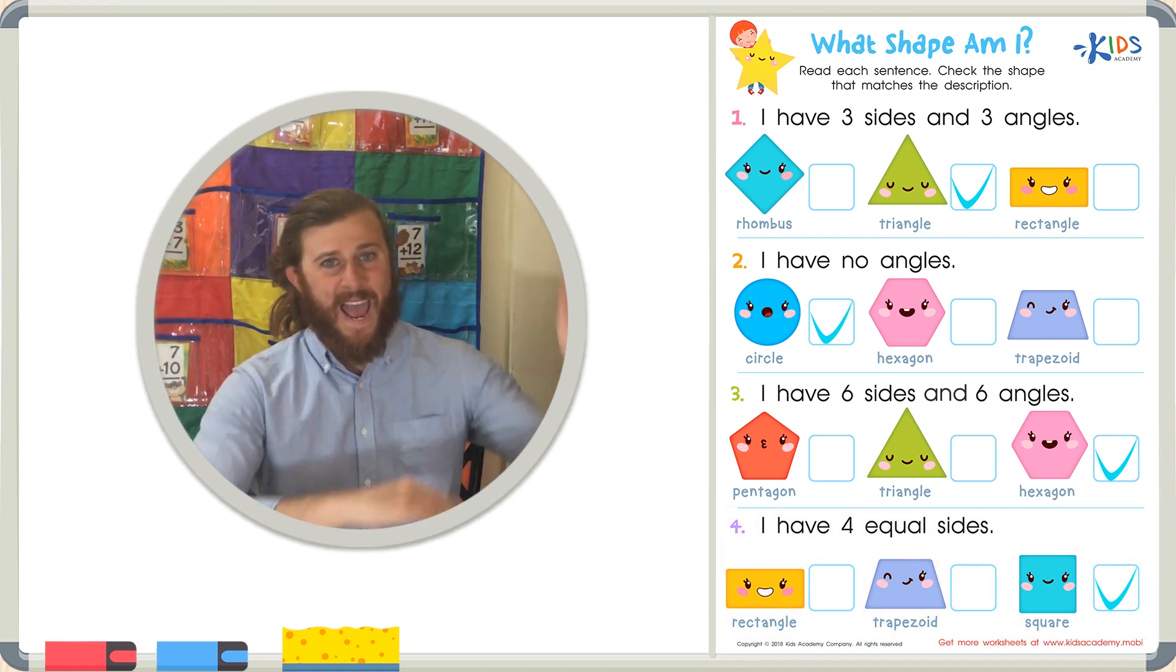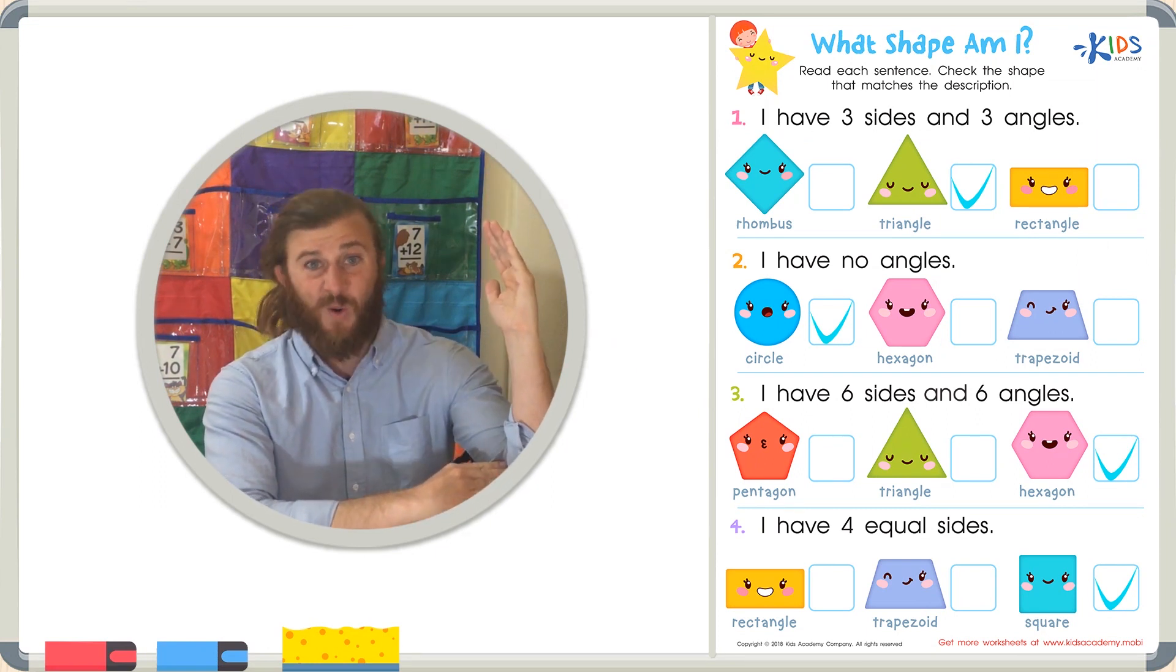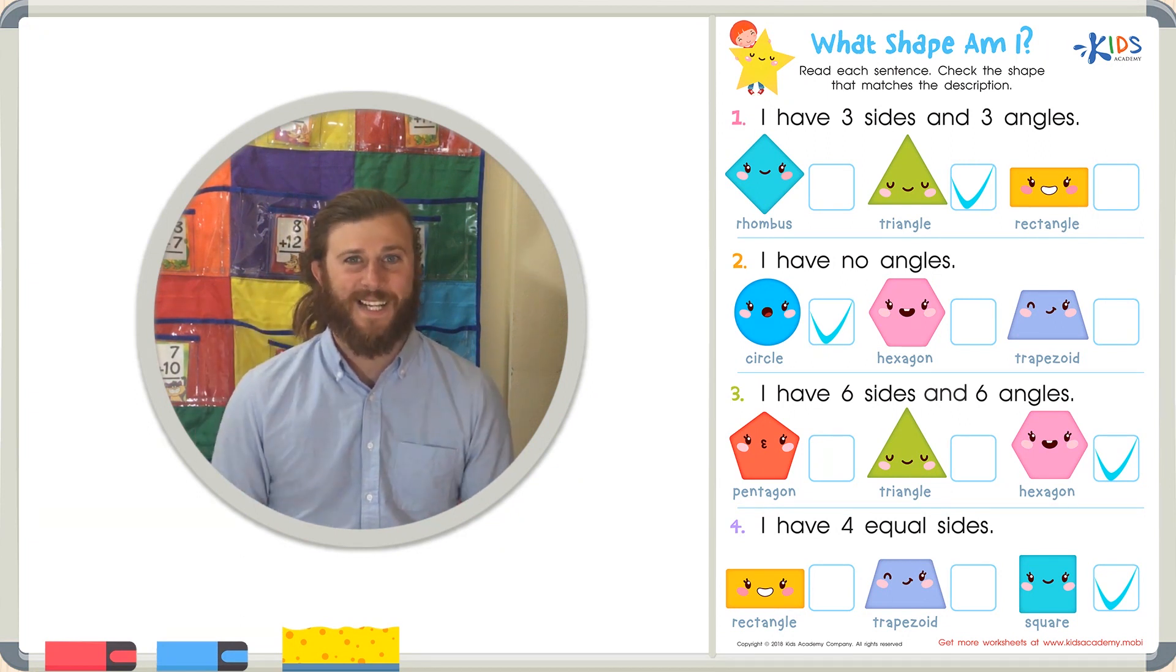Remember boys and girls, a side is just like a straight line in a shape, and an angle is where two straight lines meet and they form an angle right there in the corner. Thanks for watching boys and girls, and we'll see you next time.